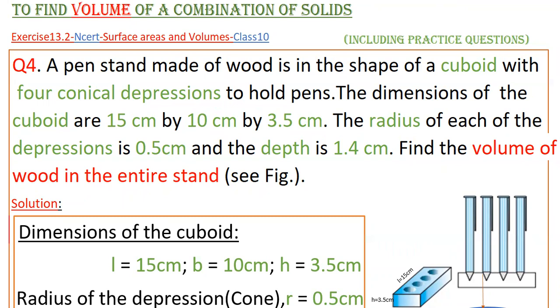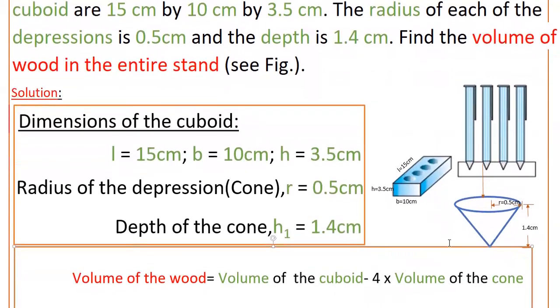So here the pen stand is made of wood in the shape of a cuboid. The dimensions of the cuboid are given: length is 15 centimeters, breadth is 10 centimeters, and height is 3.5 centimeters.